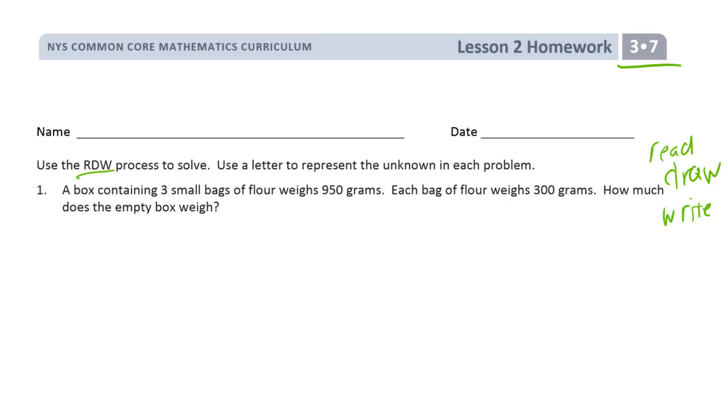We're writing an equation and an answer statement. A box containing three small bags of flour weighs 950 grams. Each bag of flour weighs 300 grams. How much does the empty box weigh? All right. So when we put something on a scale, it's in a container. The container weighs something too. And actually the bags weigh something too. But the bags of flour are 300. So, that's one bag. That's two bags. That's three bags. So that's 900.